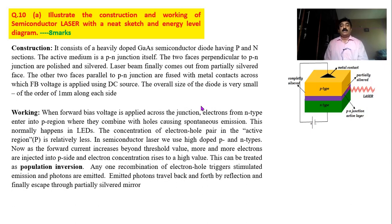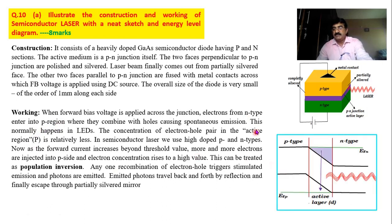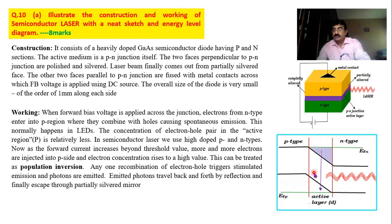Now for the working: when the forward bias voltage is applied across the junction — that means when you switch on the battery — electrons from the n-side enter into the p-region. In the energy level diagram, p-type is on one side and n-type on the other. When n-type is connected to negative and p-type to positive, electrons are pushed from the n-type due to negative-negative repulsion. More and more electrons are pushed into this region from the n-side, and more holes from the p-side.